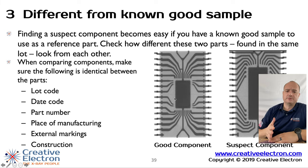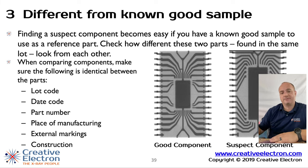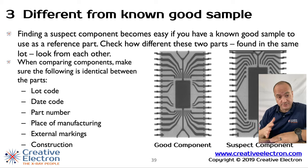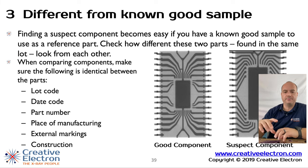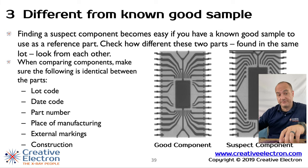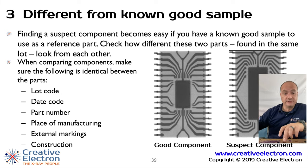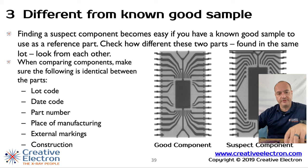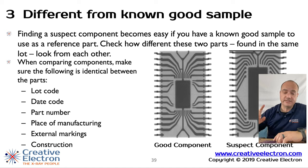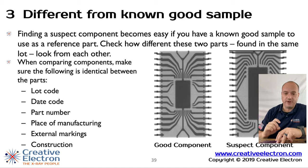Another technique is to compare the X-ray image to something you've used before. But make sure you compare apples to apples — the lot code, date code, part number, place of manufacturing, and any external markings have to be exactly the same. A component made in Malaysia and the same part number made in the Philippines may use different lead frames, so those X-rays can look different yet both be legitimate. Make sure you compare apples to apples, not apples to oranges.